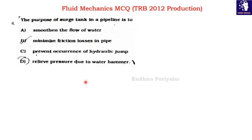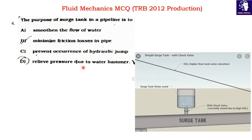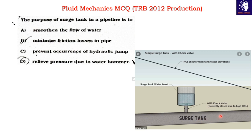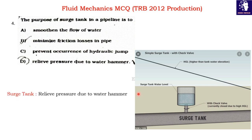Question 4: The purpose of a surge tank in a pipeline is — Option A: smoothen the flow of water; Option B: minimize the friction loss in pipe; Option C: prevent the occurrence of hydraulic pump; Option D: relieve pressure due to water hammer. The surge tank acts as a temporary storage device and relieves pressure due to the water hammer effect. Option D is the correct answer.